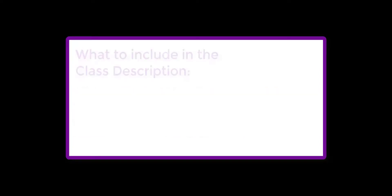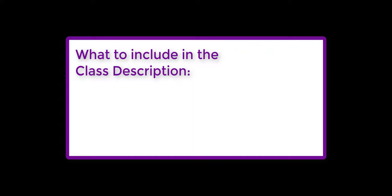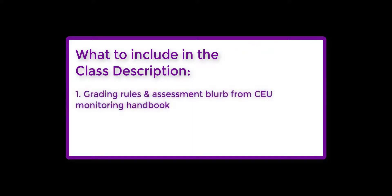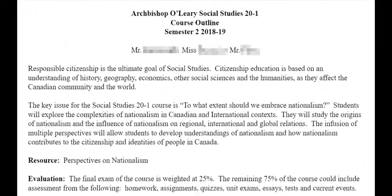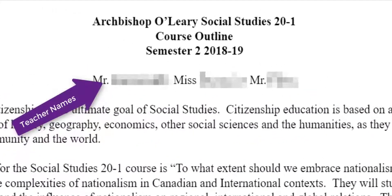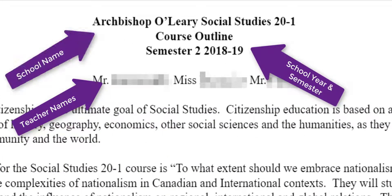We need to include two things in the class description. First, we type the grading rules and the assessment caveat found in the CEU monitoring handbook directly into the class description, and second we need to include the link to a public URL of the course outline. The course outline must include the teacher's name, the school year, and the school name.